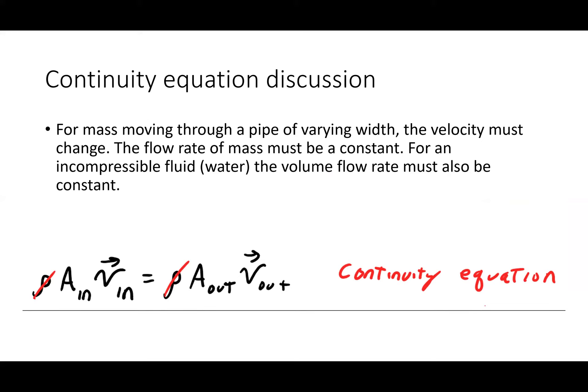Now we segue into dynamic fluid equations, starting with the continuity equation. Mass isn't created or destroyed, so the same amount of mass entering a pipe must come out. For an incompressible fluid like water, density is constant, so we write the continuity equation as volume flow rate in equals volume flow rate out, where Q equals velocity times area, giving a flow rate in cubic meters per second.